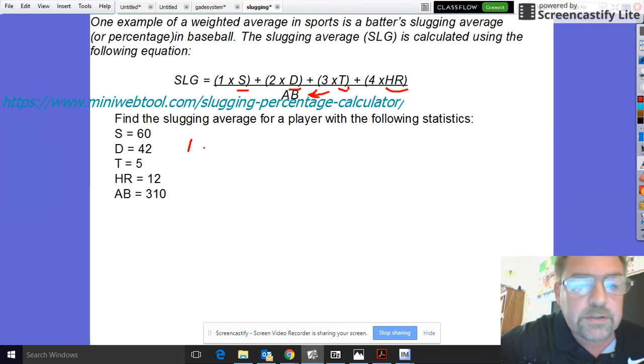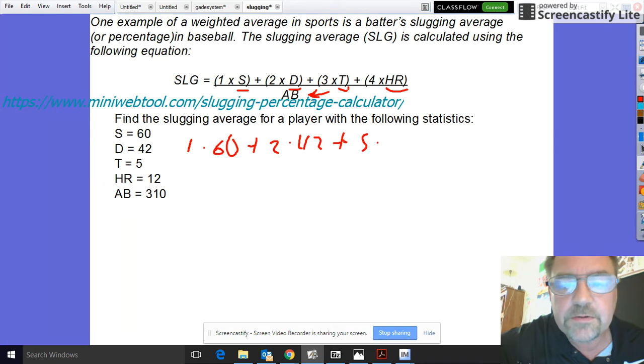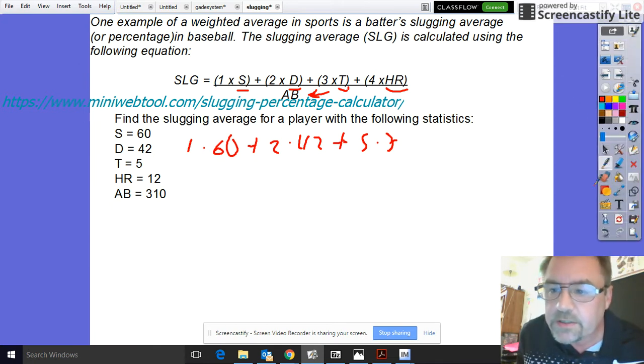So it's 1 times 60 plus 2 times 42, plus 5 times—or 3, that looks pretty sloppy and I actually got to fix that.